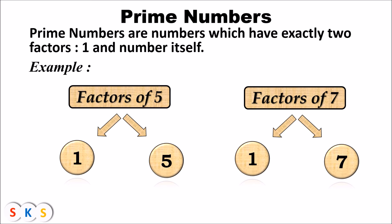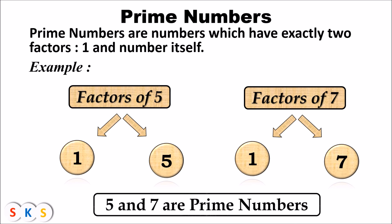We have seen that the numbers five and seven have exactly two factors — one and the number itself. Such numbers are examples of prime numbers. Therefore five and seven are prime numbers.